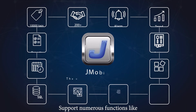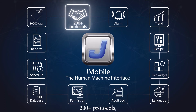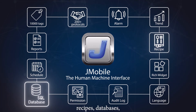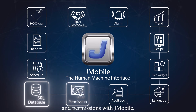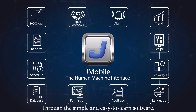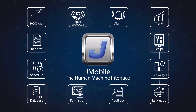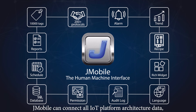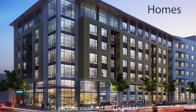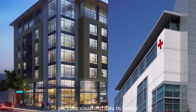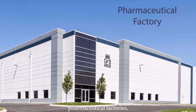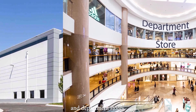J-Mobile supports numerous functions like 200-plus protocols, recipes, databases, and permissions. Through this simple and easy-to-learn software, J-Mobile can connect all IoT platform architecture data and perform visualized data displays in homes, hospitals, pharmaceutical factories, and department stores.